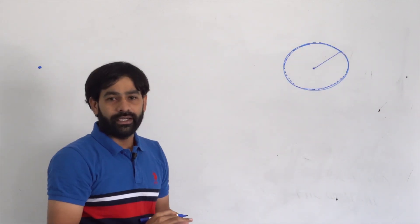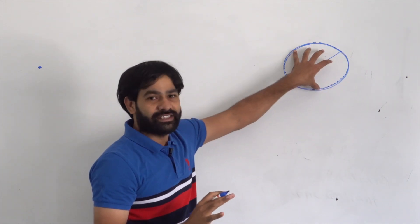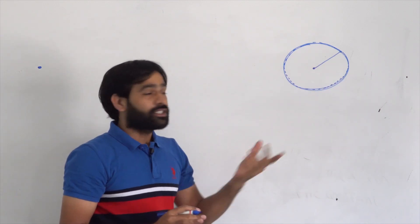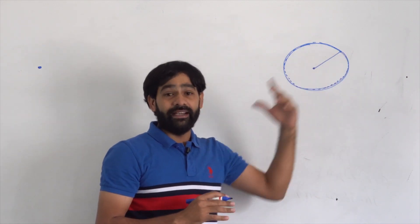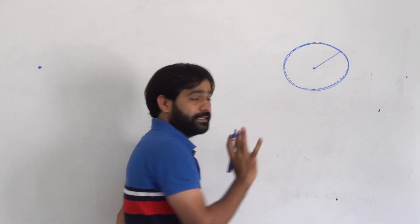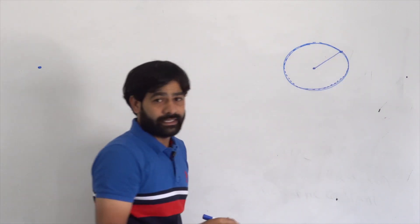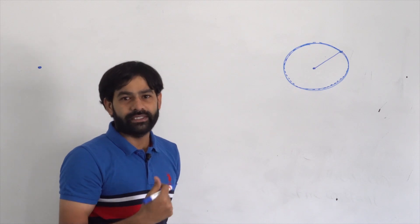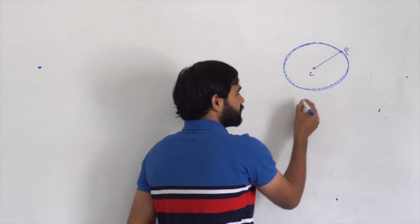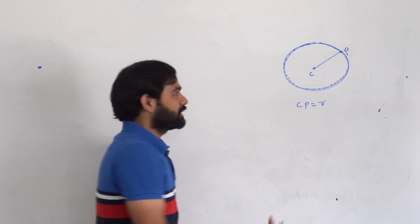You need to have clear clarity: circle means only the boundary — only the dotted curve I marked here is called the circle. What do you call the entire region? The entire thing is called the circular region. This fixed point is called the center. Any point on the boundary is called any point on the circumference or on the circle. The distance from the fixed point to that point is called the radius.